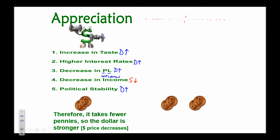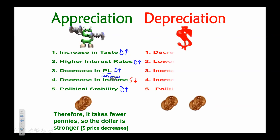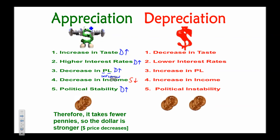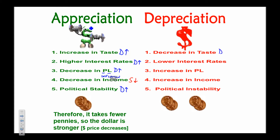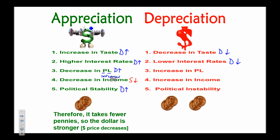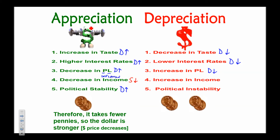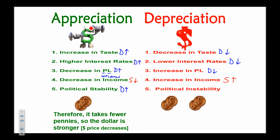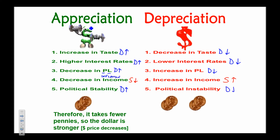The opposite factors cause currency depreciation: a decrease in taste for a nation's goods reduces demand for their currency; lower interest rates result in less demand; higher prices cause less demand; an increase in income means we supply more of our dollars buying foreign goods; and political instability creates less demand for a currency.